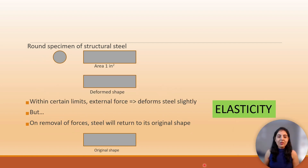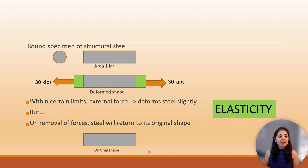Within certain limits, when an external force is applied it deforms steel slightly, but on removal of the force the steel will return to its original shape. This property of steel is known as elasticity.